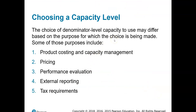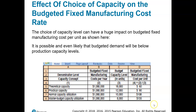When choosing a capacity level, we need to consider why we're making that choice and what drives us to pick one over another. Relevant factors include: product costing, capacity management, pricing, performance evaluation, external reporting, and tax requirements. We want to take all of those into consideration when choosing which denominator level of capacity to use for budgeted fixed manufacturing costs per unit.